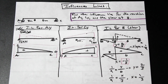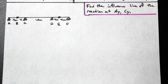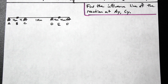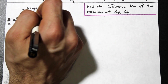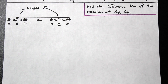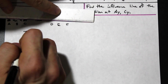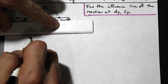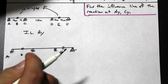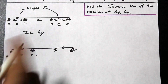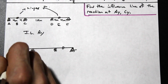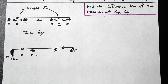Let's apply this to a more complicated beam. We're asked to find the influence lines for AY and CY on a beam with internal hinges. It looks really tricky, but we can apply exactly the same logic. Starting with AY, we draw the beam and release the structure at A as usual, replacing the support with a one kilonewton force.